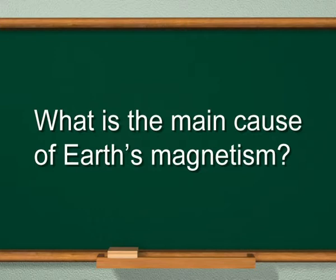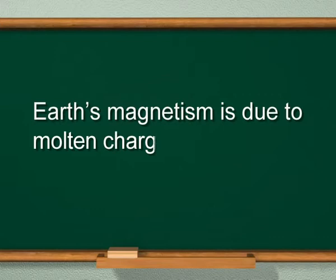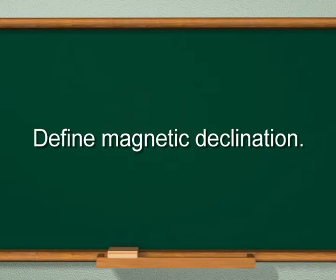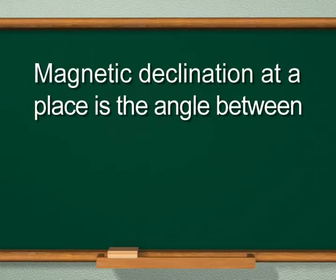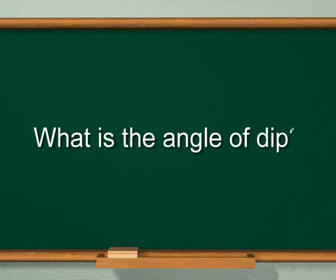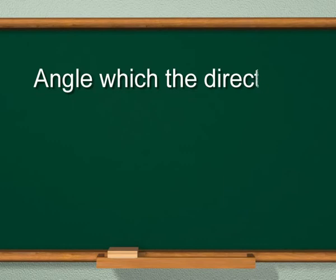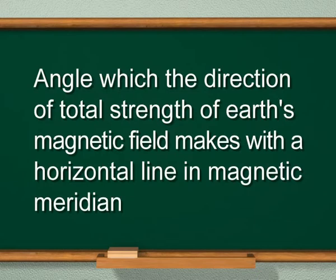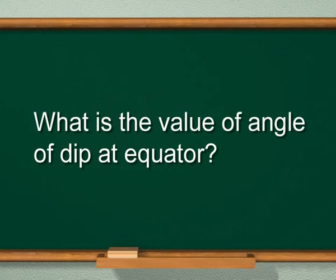Now answer some questions quickly. What is the main cause of Earth's magnetism? The answer is: Earth's magnetism is due to molten charged metallic fluid in the core of the Earth. Define magnetic declination. Magnetic declination at a place is the angle between magnetic meridian and geographic meridian at that place. What is the angle of dip? It is the angle which the direction of total strength of Earth's magnetic field makes with a horizontal line in the magnetic meridian. What is the value of angle of dip at the equator? The answer is zero degrees.